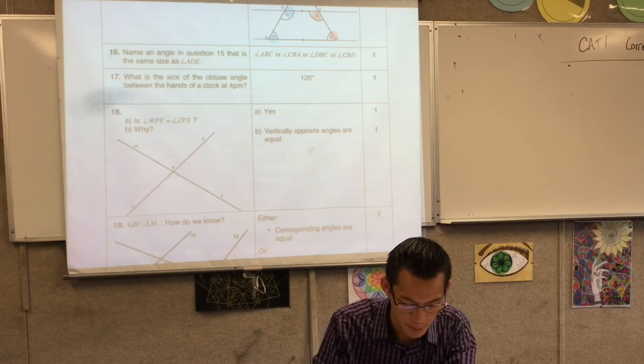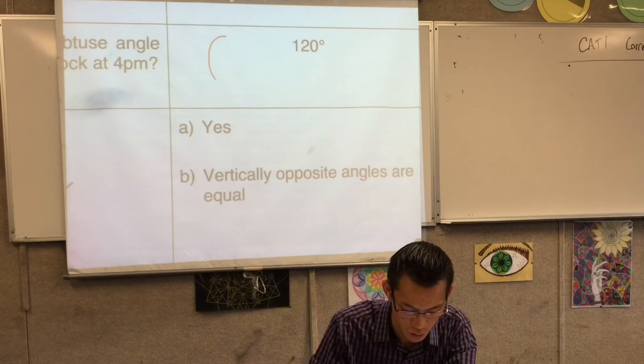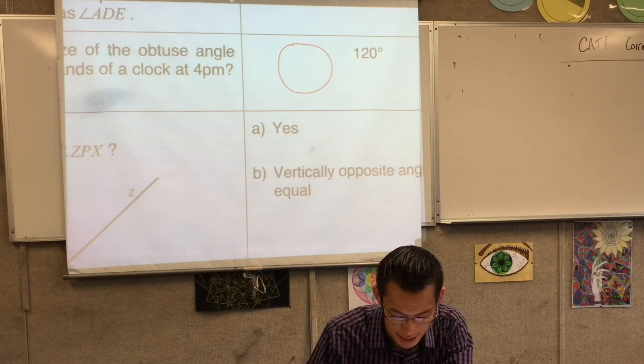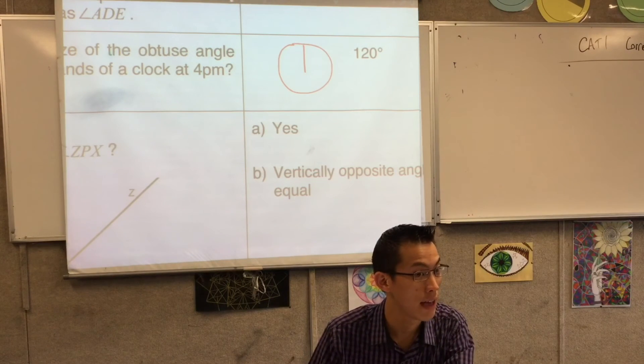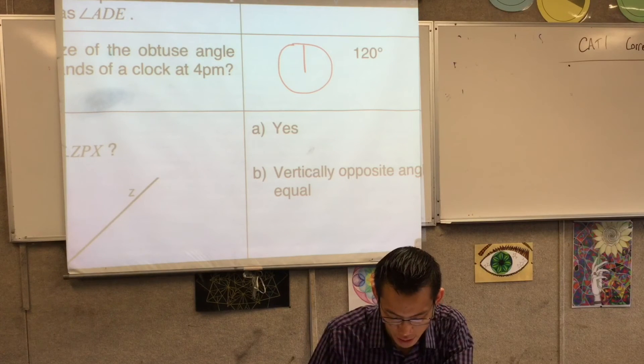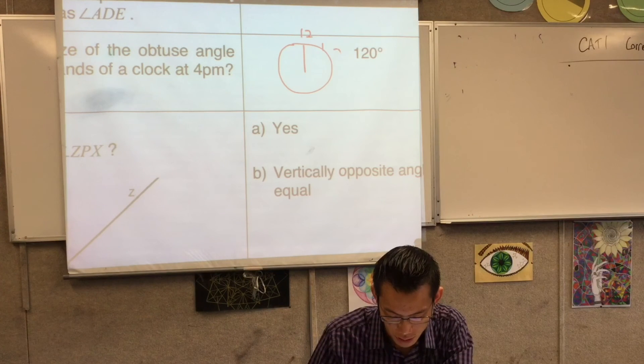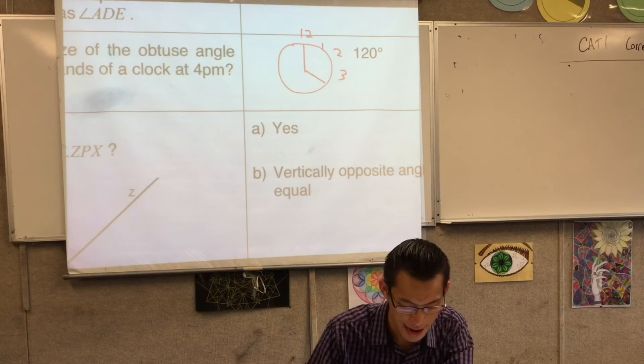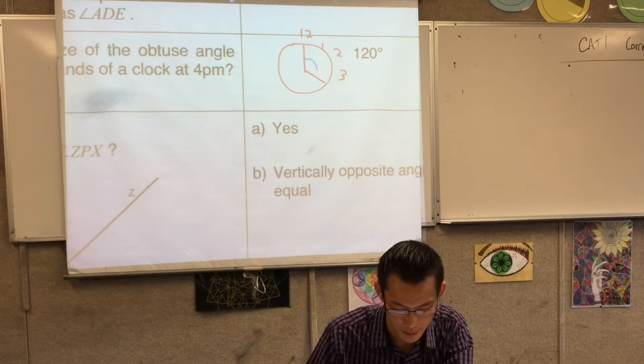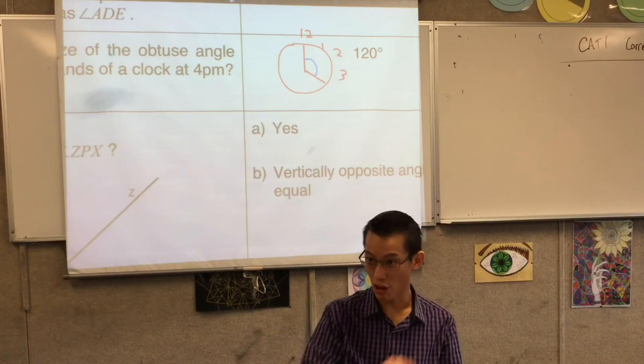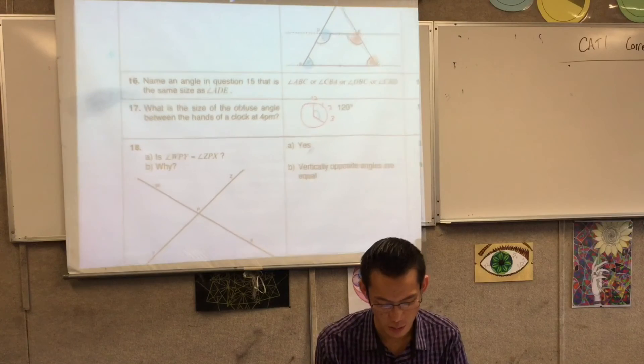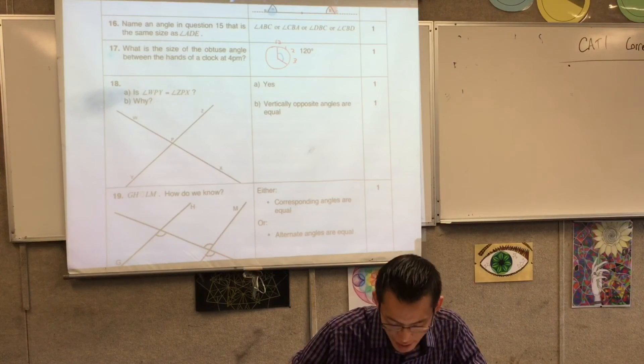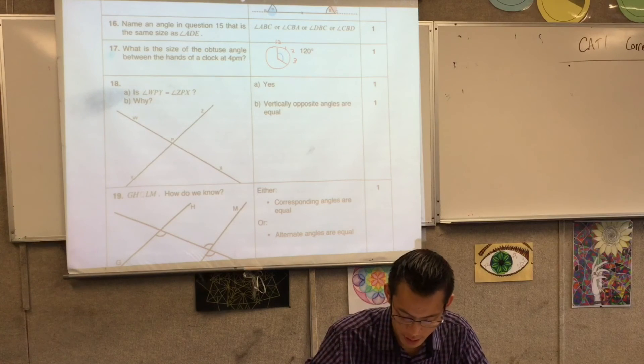Question 17. The best people with their answers drew a clock and they said, at 4 p.m. the minute hand will be at 12 and the hour hand will be pointing at four, which is downwards. And from that, you could kind of measure out 120 degrees because each one of those intervals is 30 degrees every time. And that was a tricky question. Number 18. Are these angles equal? Yes. And we were looking for this reason here.